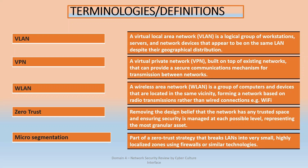Micro-segmentation builds on the Zero Trust strategy by breaking a LAN into small, highly localized zones using firewalls. For instance, if you have a network of 100 users, you can break them into groups of 10, creating micro-networks within the larger network. When someone moves from one segment to another, they must go through checks — each segment has zero trust for the others. Micro-segmentation helps achieve the Zero Trust strategy.